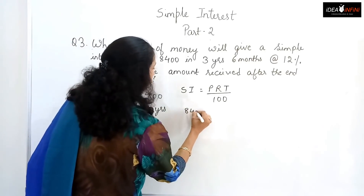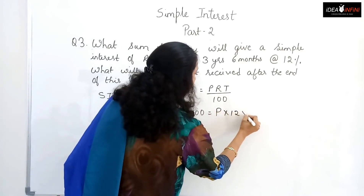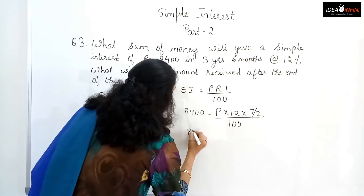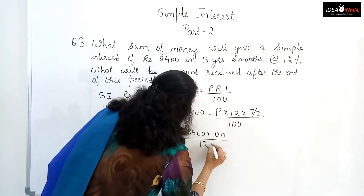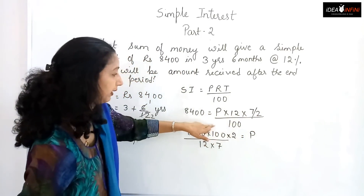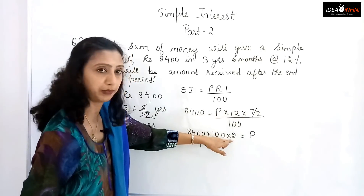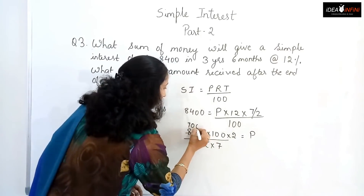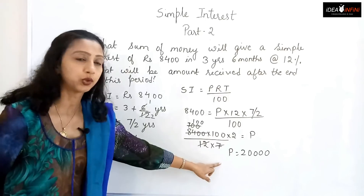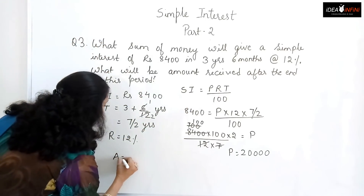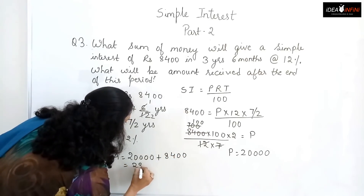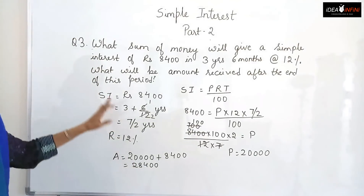Using SI = PRT/100: 8,400 = P × 12 × (7/2) / 100. The 2 comes to the denominator, so P = 8,400 × 100 × 2 / (12 × 7). Solving: 8,400 × 200 / 84 = P. This gives P = ₹20,000. The amount received is P + SI = 20,000 + 8,400 = ₹28,400.